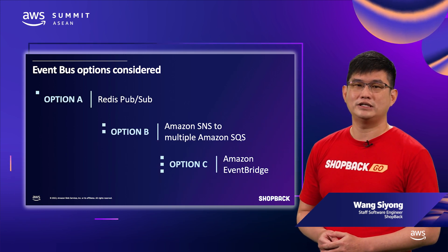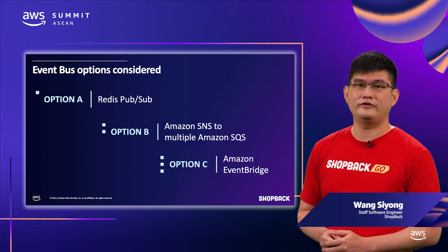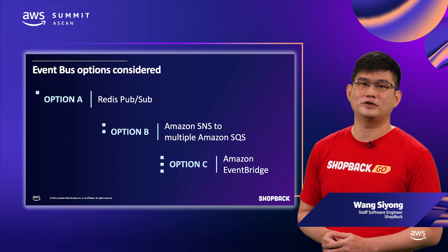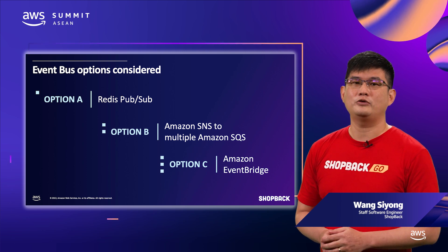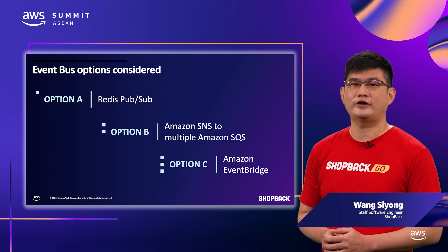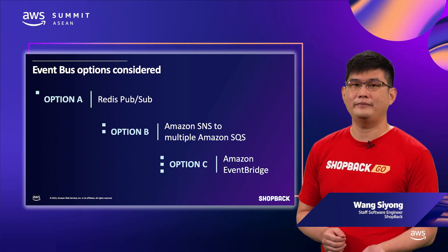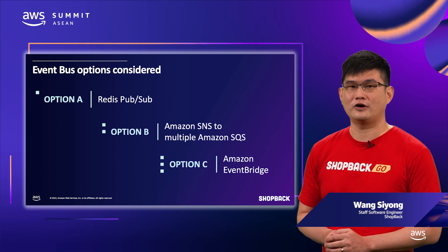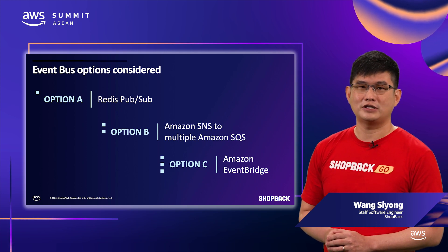Here are some options we considered when designing the event bus. Option A was using Redis Pub/Sub — a very simple model that works well up to a certain scale. However, managing the infrastructure is an overhead, and we were looking for something that scales elastically and is cost effective during traffic spikes. We did not want to pre-scale to a high level for an extended period of time, nor manage frequent scaling up and down to optimize cost.